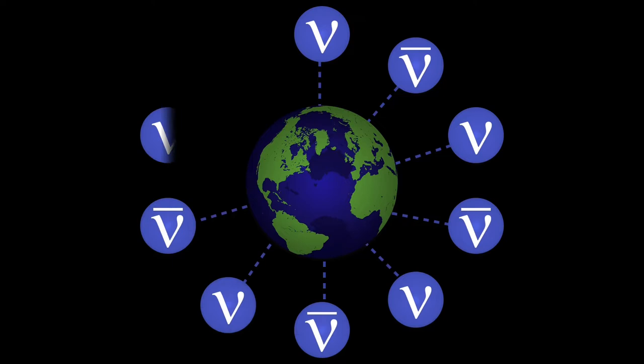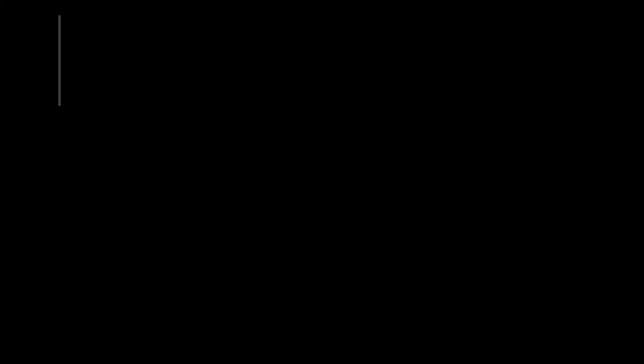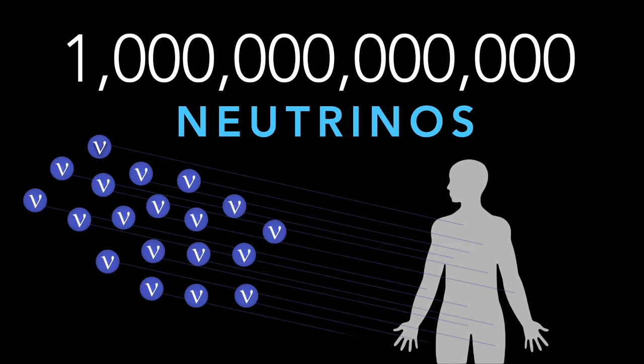Neutrinos are created through many processes all over the universe. They're traveling from all directions at almost the speed of light and come in large numbers. More than one trillion neutrinos, yep that's a lot of zeros, are passing through our body every second, but we don't feel anything because they barely interact with matter.